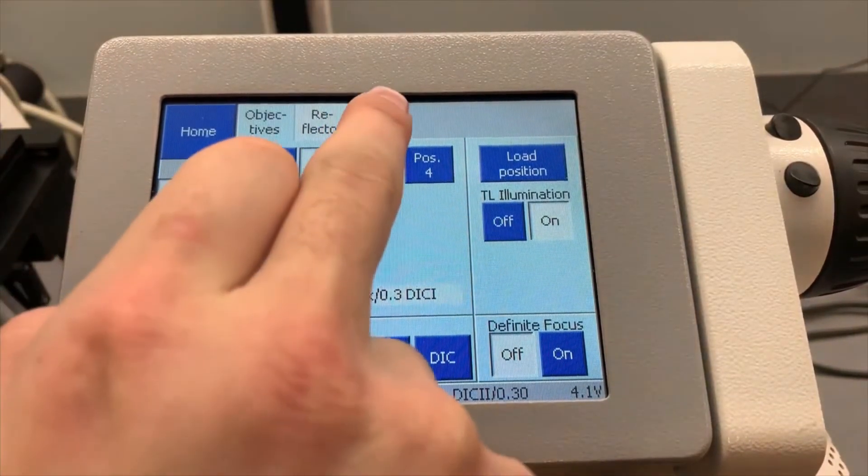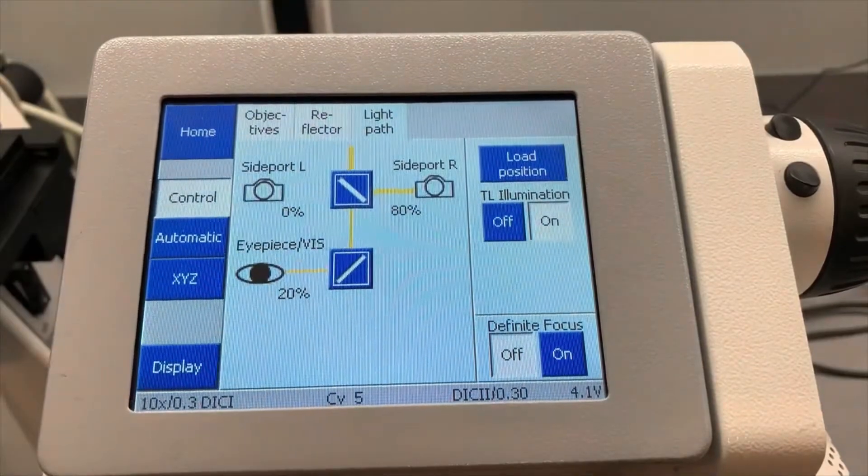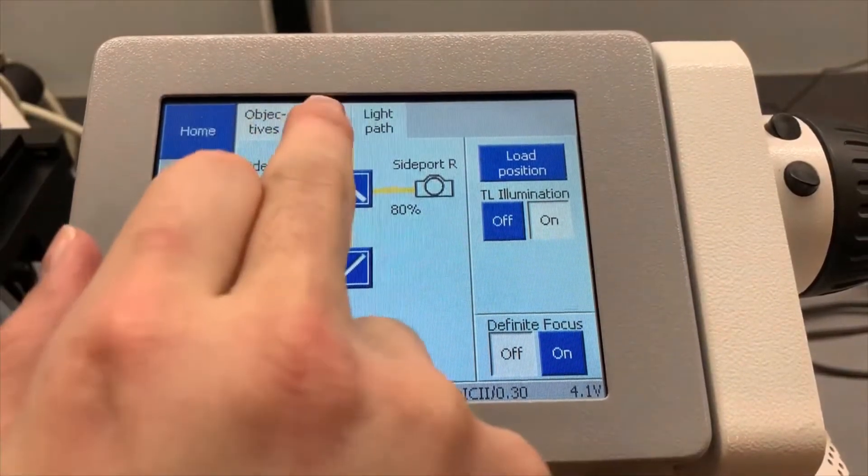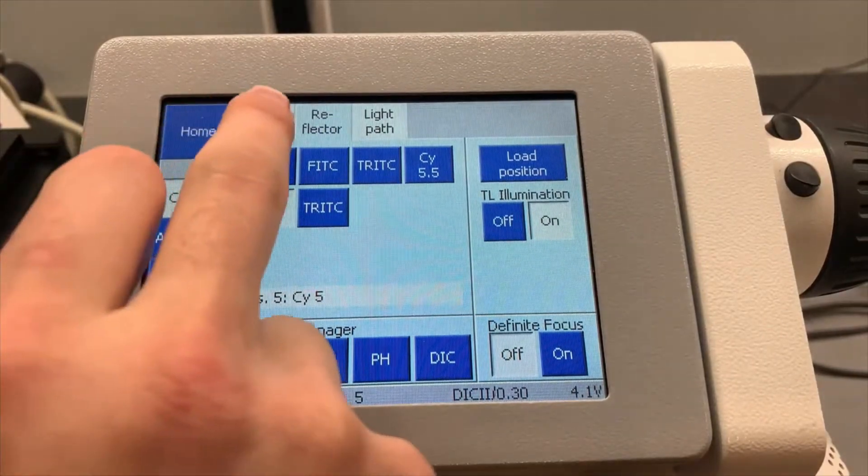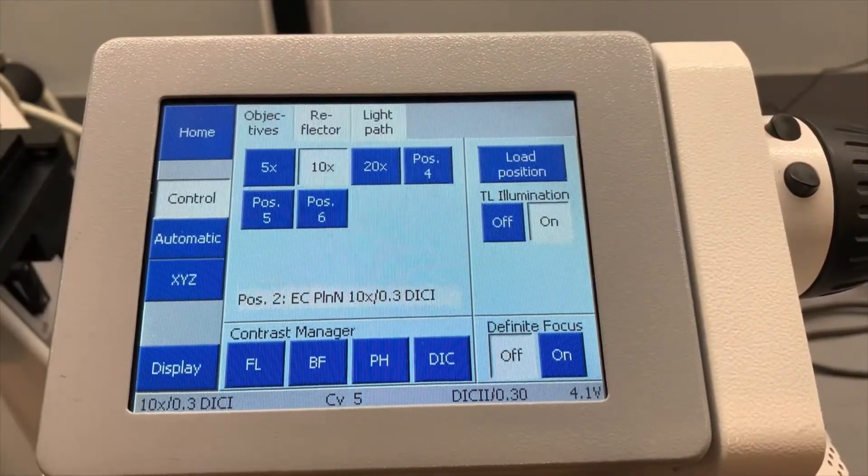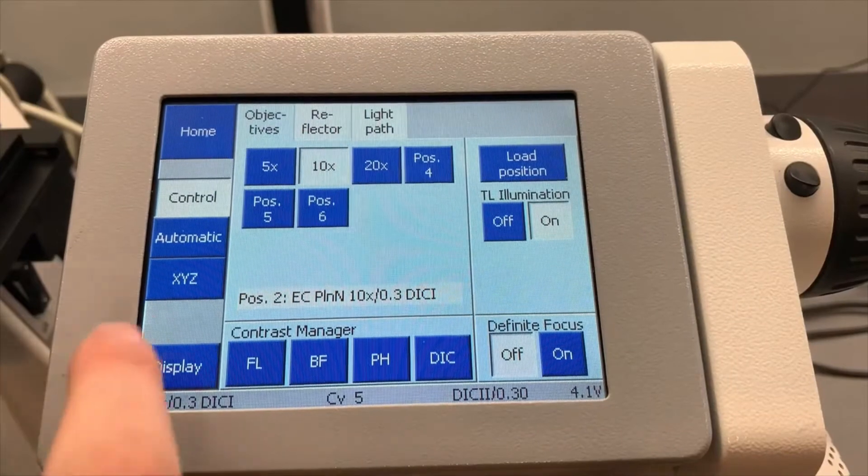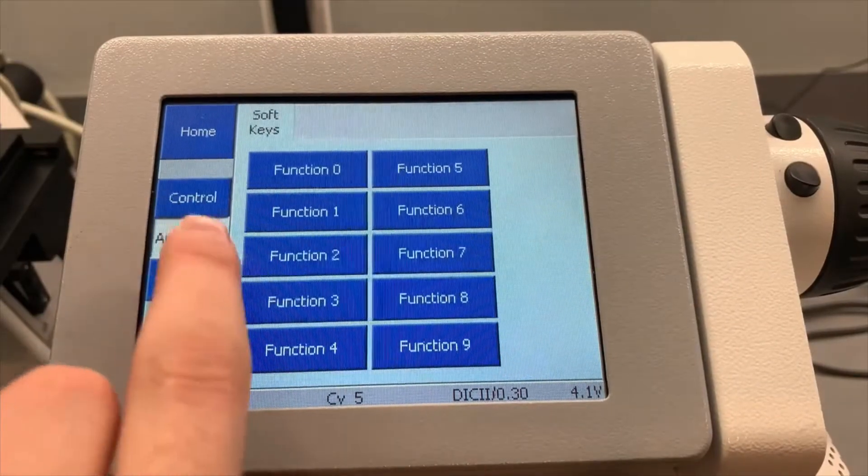So if you want to go into your microscope settings you can do light path, you can go to your reflectors meaning your cubes, you can go to your objectives and switch around objectives here, you can also do contrast, you can do soft key functions